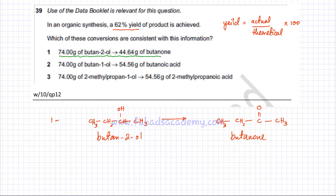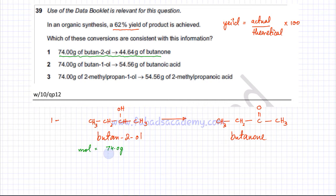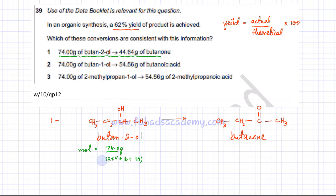Butan-2-ol is being converted into butanone. The masses are given: 74 grams of butan-2-ol. To find the moles of butan-2-ol: moles = 74 divided by the molar mass. There are 4 carbons (12×4), 1 oxygen (16), and 10 hydrogens, giving a molar mass of 74. So the moles of butan-2-ol equals 1 mole.